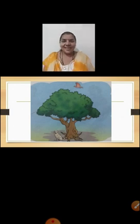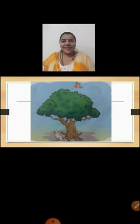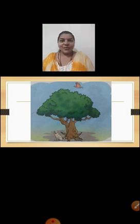Now children, if you see this tree we can see a bird and a dog. A bird is flying above the tree and a dog is below the tree. So children, above and below are the position words, which shows us different positions.